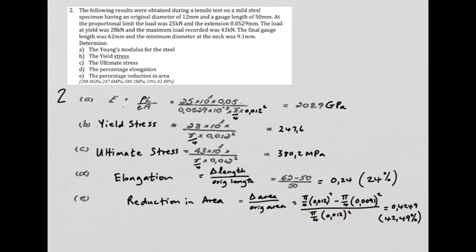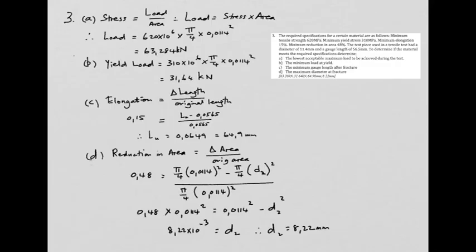The pi upon fours all cancel, and you can quickly work that out, and you get 0.4249, which if you wish to express it as a percentage, which is what they asked for, you'd multiply by 100, and there's your 42.49%.